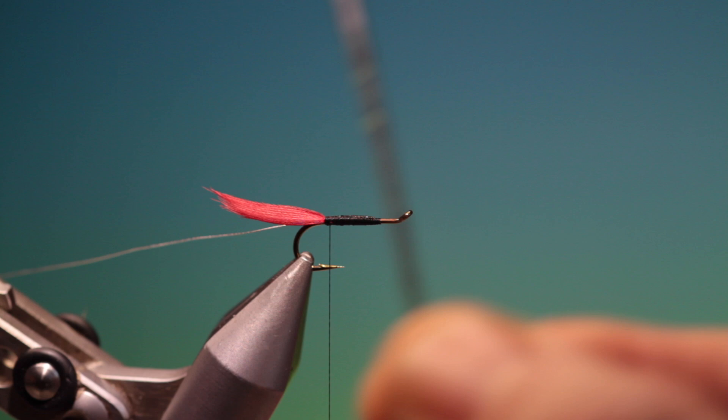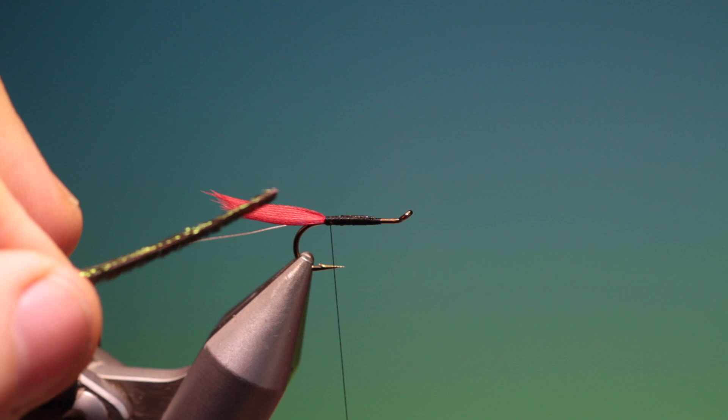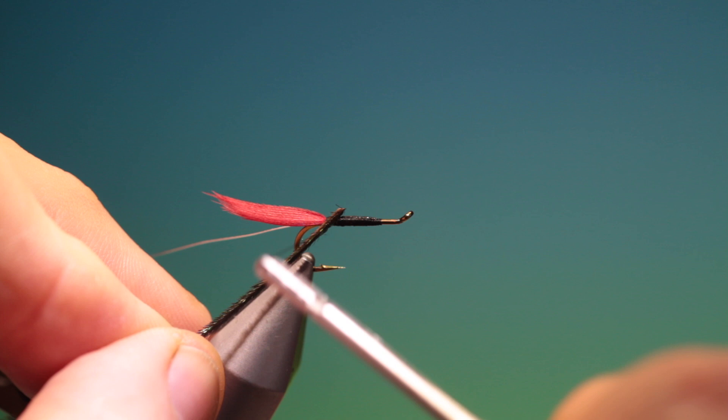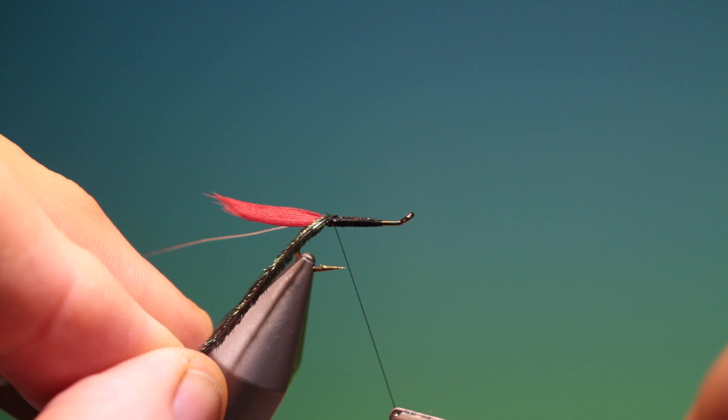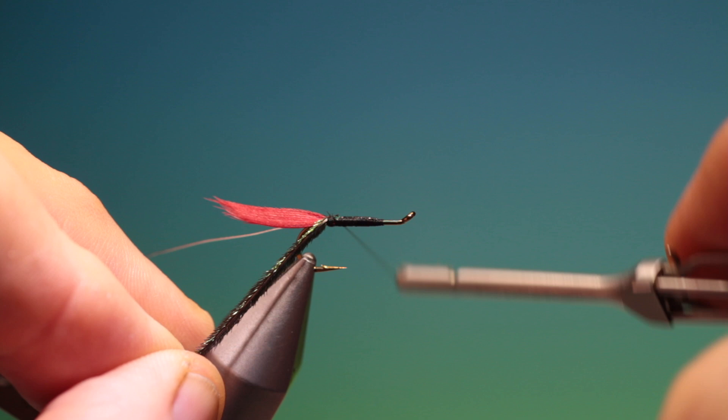So what we need now is a very bushy, fibery peacock herl. And we want to tie this in. This is an interesting technique because you get a quill body and a herl body at the same time. We tie this in with the butt end with the fibers facing rear towards the tail.